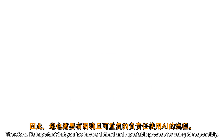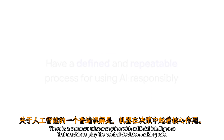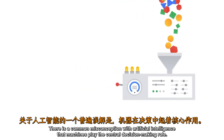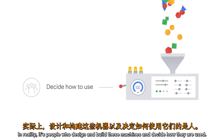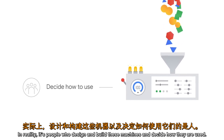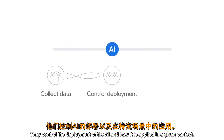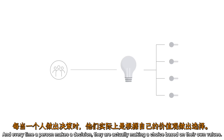Therefore, it's important that you too have a defined and repeatable process for using AI responsibly. There's a common misconception with artificial intelligence that machines play the central decision-making role. In reality, it's people who design and build these machines and decide how they're used. People are involved in each aspect of AI development — they collect or create the data that the model is trained on, and they control the deployment of the AI and how it's applied in a given context. Essentially, human decisions are threaded throughout our technology products, and every time a person makes a decision, they're actually making a choice based on their own values.